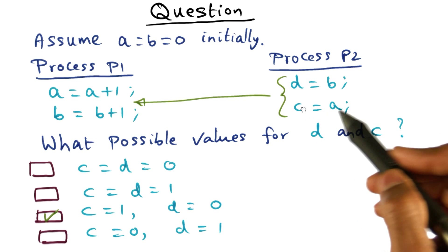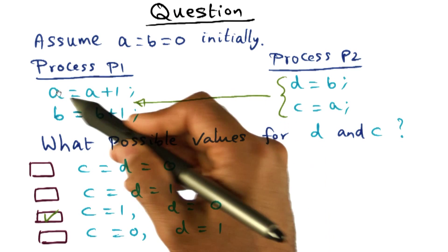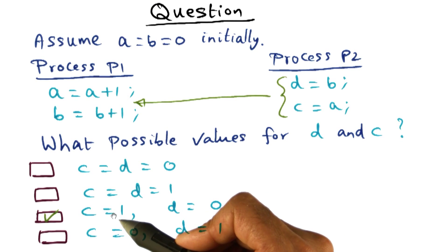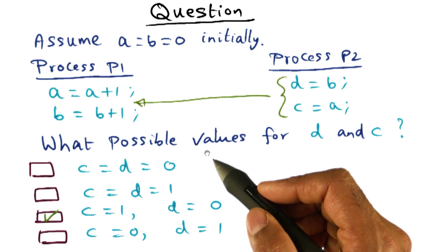And what you get into C is the old value of A, sorry, the new value of A, because this instruction is executed. And therefore, you get 1 into C. And that's why this possibility is also perfectly valid.